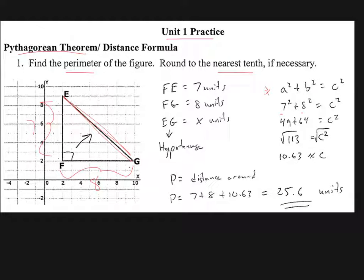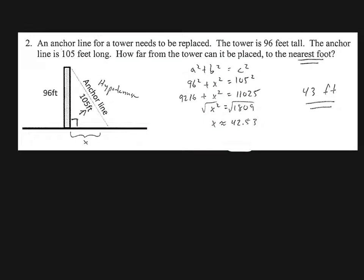that whole distance is 25.6 units. Now I put units because we didn't have any units here. But say we had these boxes were worth one foot, then I would say 25.6 feet. Next page. I guess for you it's not the next page, it's the next problem. Anyway, onward and upward,